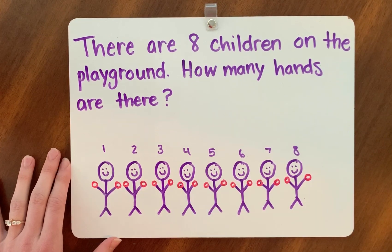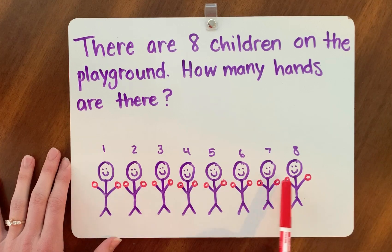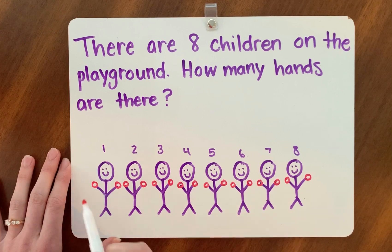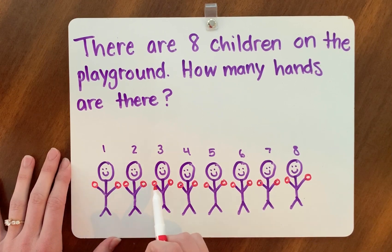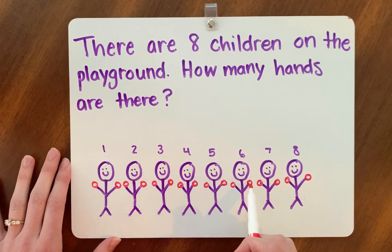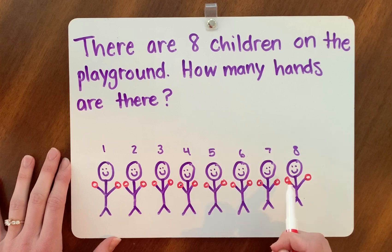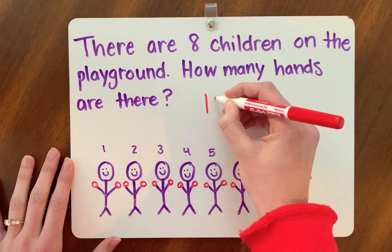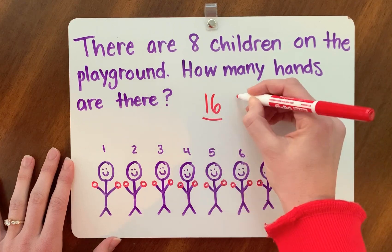Now I can solve this problem by counting the hands. Let's solve it. Eight children — how many hands? Let's count together. One, two, three, four, five, six, seven, eight, nine, 10, 11, 12, 13, 14, 15, 16. There are 16 hands.